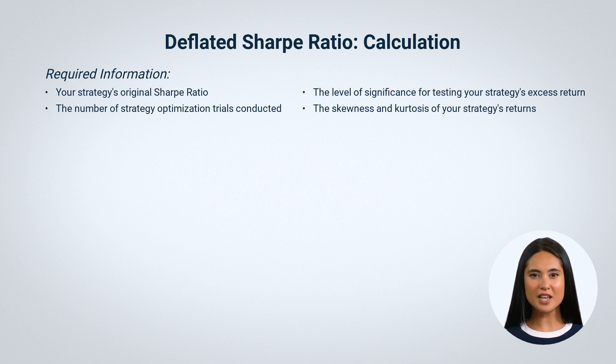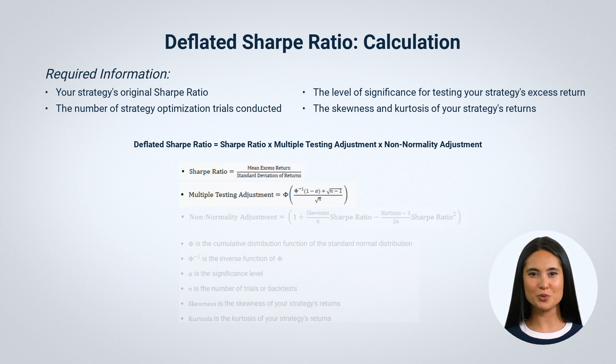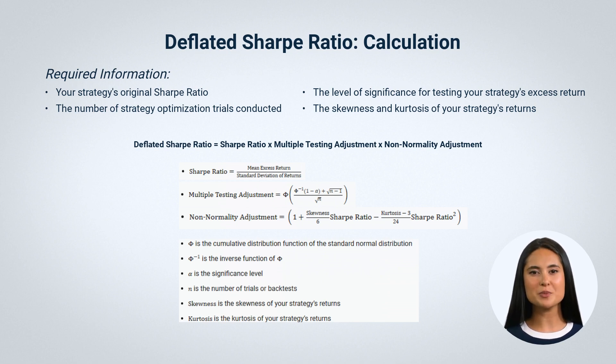Now, let's dive into how it's calculated. Deflated Sharpe ratio equals Sharpe ratio multiplied by multiple testing adjustment multiplied by non-normality adjustment. Start with the original Sharpe ratio, which is the ratio of the mean excess return to the standard deviation of returns. Multiply it by a factor that adjusts for multiple testing. This factor is based on the inverse normal cumulative distribution function and depends on the significance level and the number of trials or backtests. Multiply it by another factor that adjusts for non-normality of returns. This factor depends on the skewness and kurtosis of returns and the original Sharpe ratio.